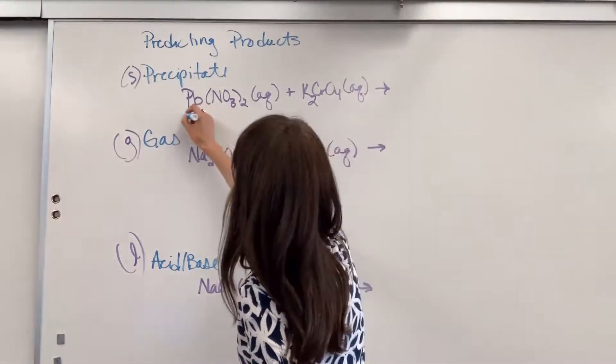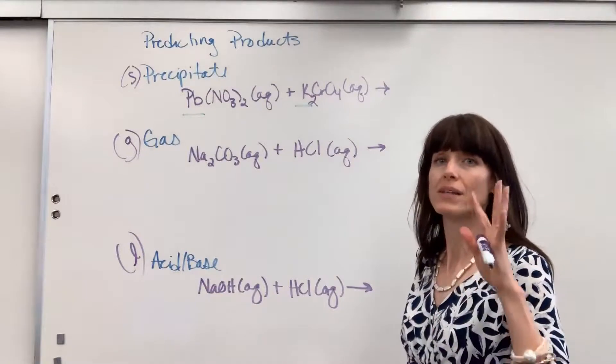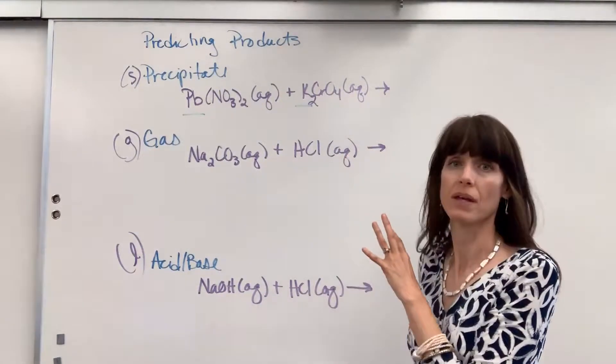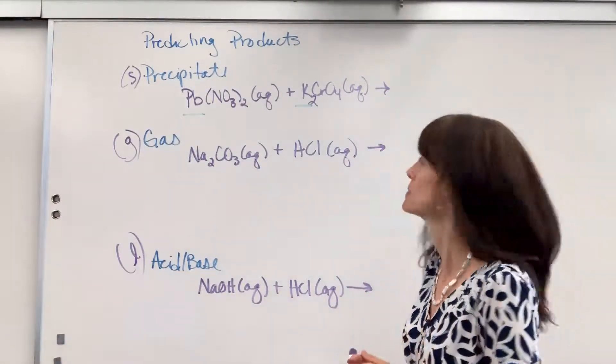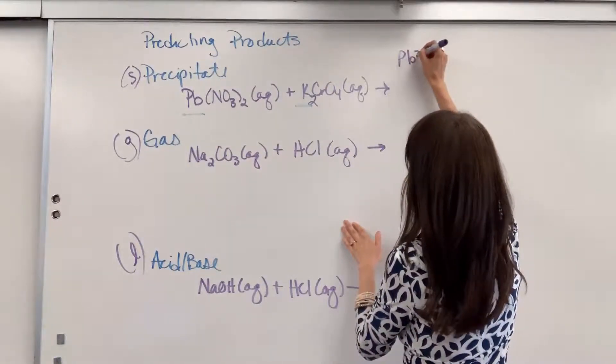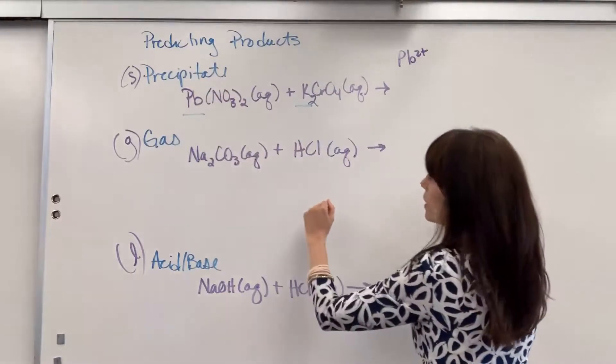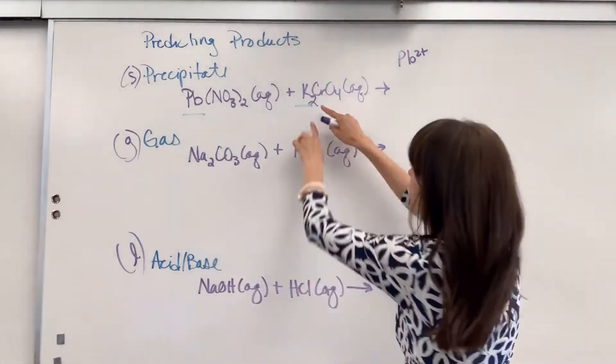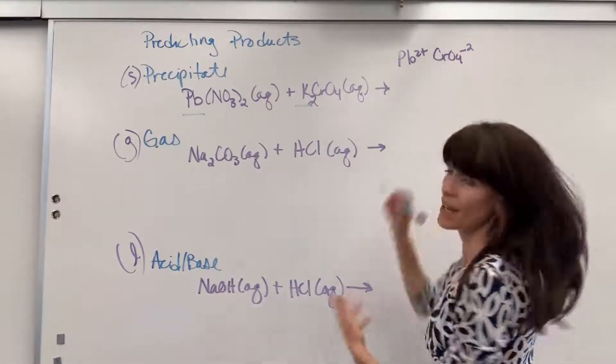Look at this with me. We are going to switch the lead and the potassium. Always go to charges to make sure when you write the new chemical formulas, you have the correct chemical formula, the right subscripts. I'm going to do the lead first. That is a Pb2+, I can see because I crossed that two back up, and that is going to combine with the chromate.